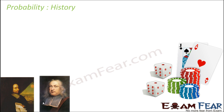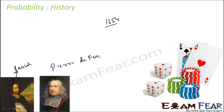Let us briefly touch upon the history of probability before starting the chapter. It actually started with gambling. In 1654, there was a gambler who approached a well-known French philosopher and mathematician, Blaise Pascal, with doubts and problems regarding dice. Pascal became interested and also discussed the same problem with another French mathematician, Pierre de Fermat. Both these mathematicians looked into these problems independently and solved them, and this gave birth to the concept of probability.